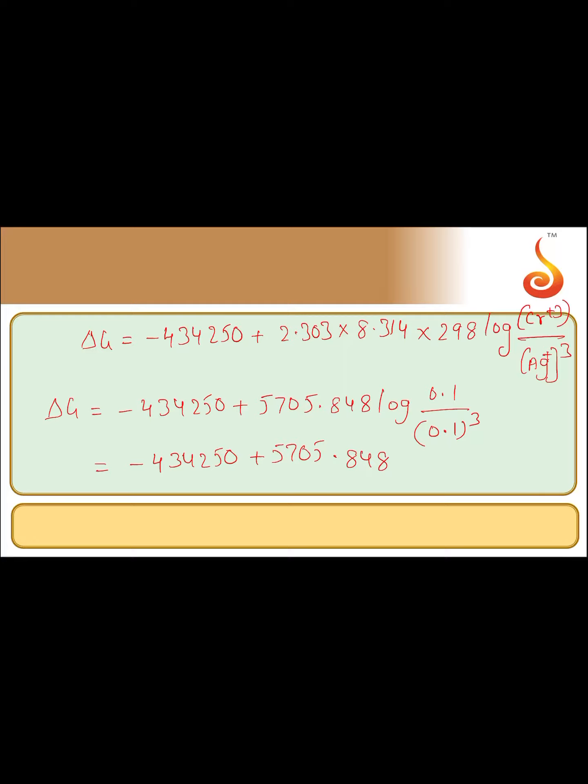Here 0.1 we can write it as 10 power minus 1, and this is 10 power minus 1 whole cube, 10 power minus 3. 10 power minus 1 by 10 power minus 3 means 10 square, that is log 10 square. So minus 434,250 plus 5705.848 into 2 log 10. Log 10 is 1.